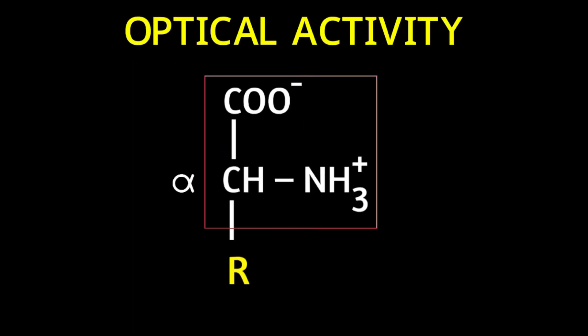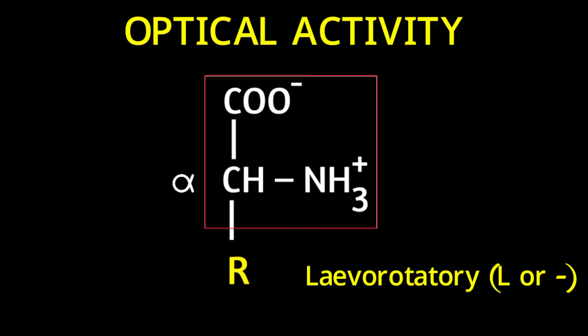Optical activity refers to the ability of a substance to rotate plane-polarized light. Carbohydrates usually rotate the light to the right — they are called dextrorotatory. Amino acids naturally rotate it to the left, so they are called levorotatory, written as L or with a negative sign.